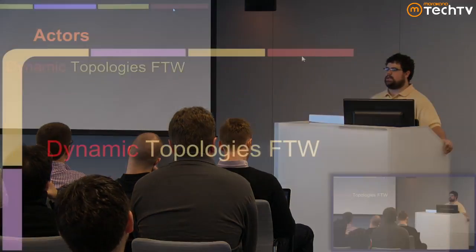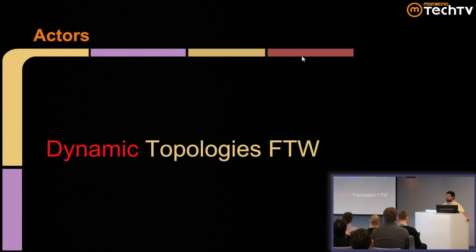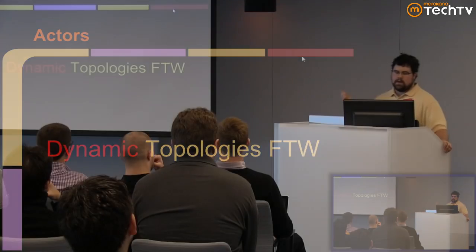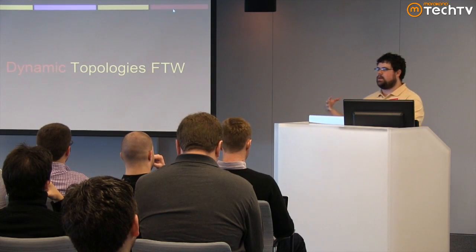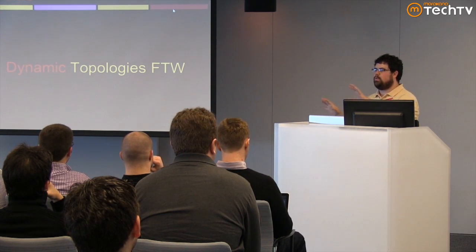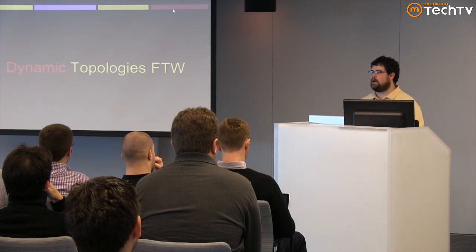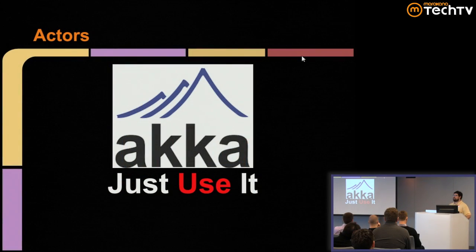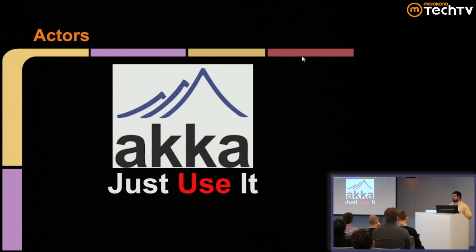Dynamic topologies — don't be afraid to have an actor change state. Don't be afraid to instantiate new actors that provide extra behavior around your actor, or to get rid of actors. Actors are all about dynamic topologies: expanding and moving based on what you need to do to handle the current input to your system. Move things around, change your topology to optimize at runtime — that code becomes really simple in an actor system. Finally, just use Akka. Akka is pretty much the best actor system on the JVM, and not just because I work at TypeSafe — I've actually tried to use all of them. Akka is amazing, especially with the 2.0 release.